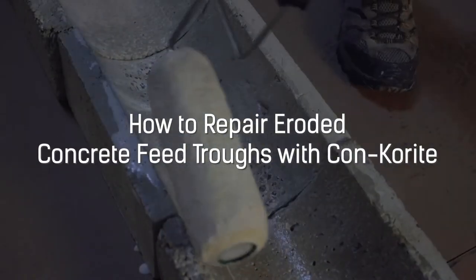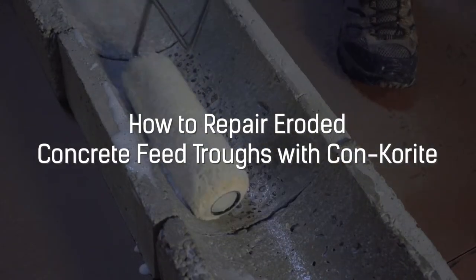When the surface of your feed troughs become rough and eroded, concorite is the best material to use for repairing and resurfacing them.